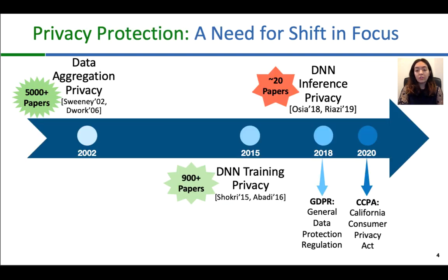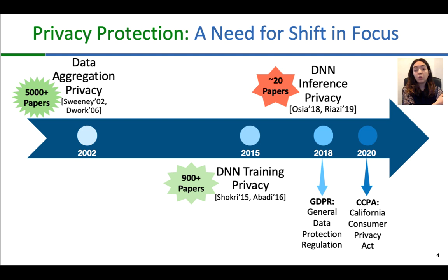Efforts to preserve privacy go at least as far back as putting doors on our homes and curtains on our windows. The major theoretical works on anonymization and rigorous privacy guarantees, such as differential privacy, go back to the 2000s. These works are mostly on data aggregation privacy — they emphasize how to gather information from data contributors and form datasets, with over 5,000 works on this subject. With the advances of machine learning and deep learning, the privacy of learning mechanisms is becoming more relevant. The major works on deep learning privacy came out in 2015 and 2016, focusing on making DNN training private and making extraction of private data from trained models more difficult. There are so far over 900 papers in this area.